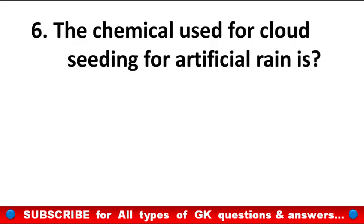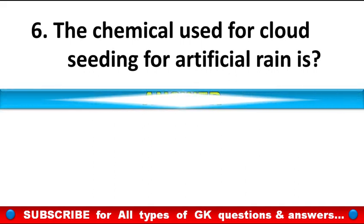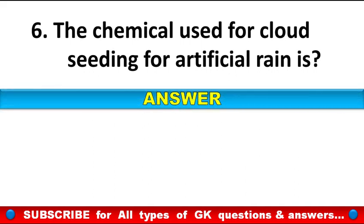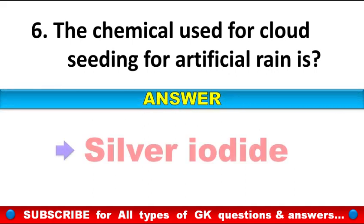The chemical used for cloud seeding for artificial rain is? Answer: Silver Iodide.